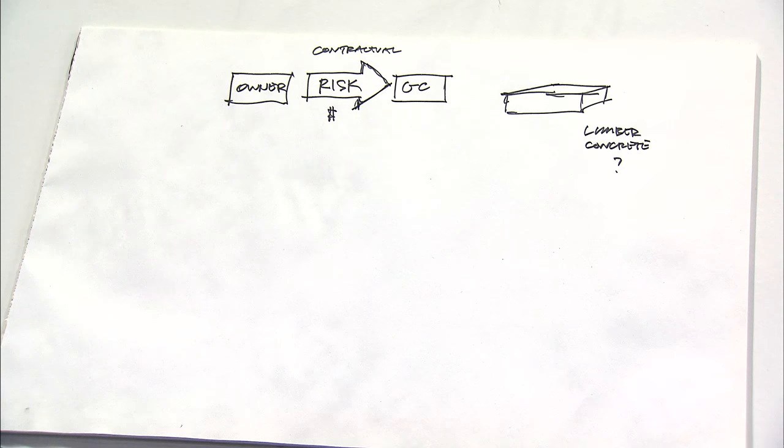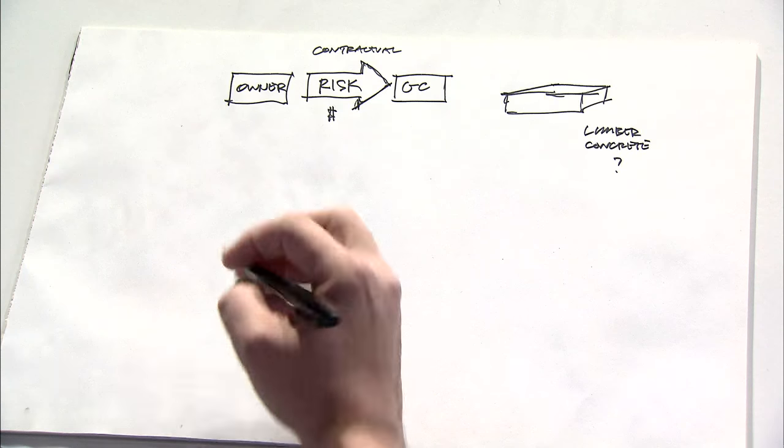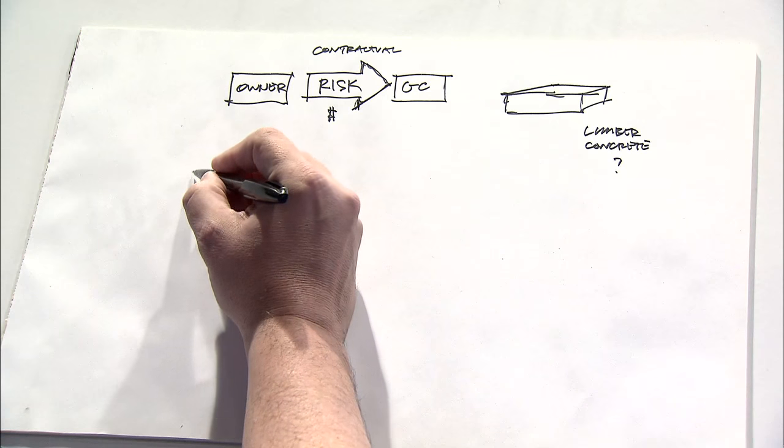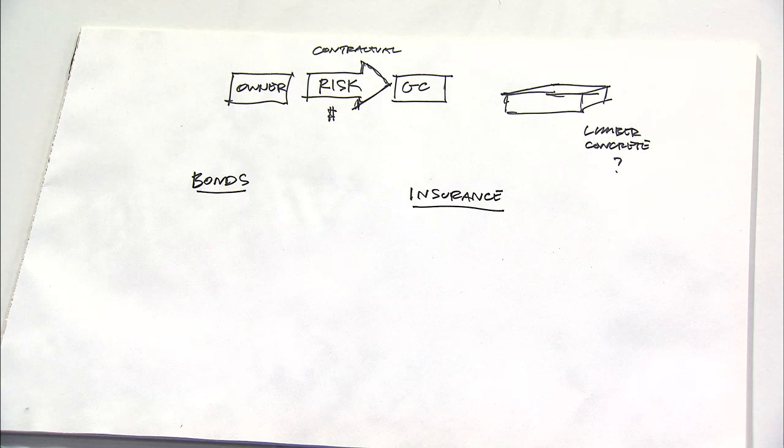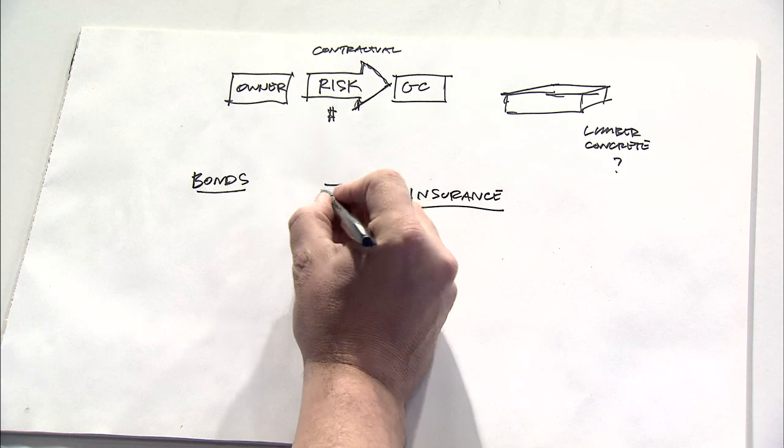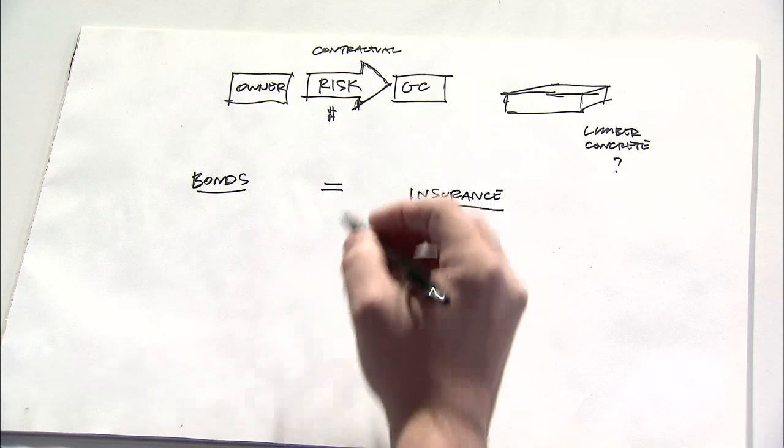And within all this transfer of risk, there are things that parties do to mitigate that risk. Many times, this takes the form of either a bond or through insurance. Bonds and insurance, in many ways, are similar with things that are common between them. On the other hand, there are things fundamentally that are very different.